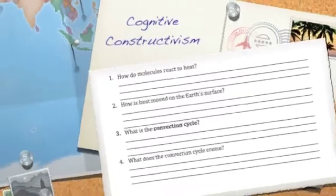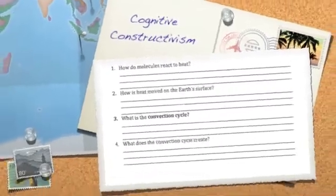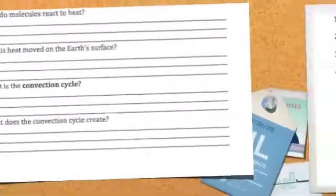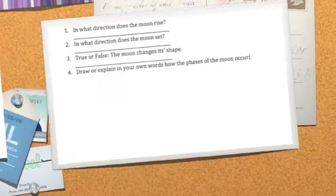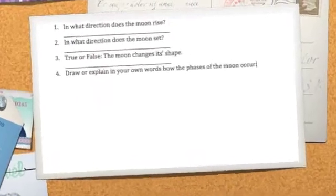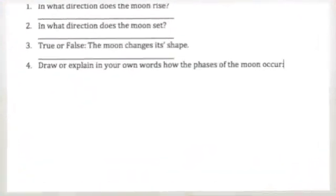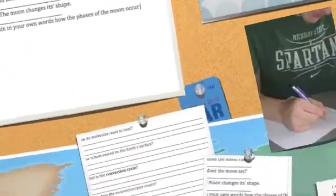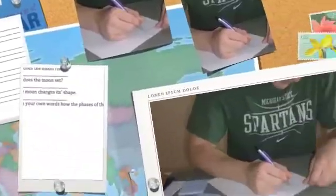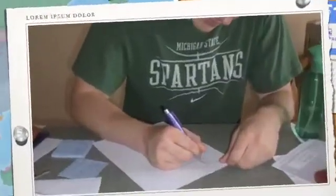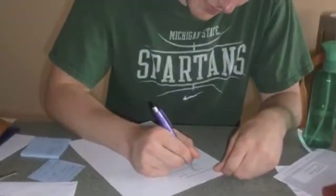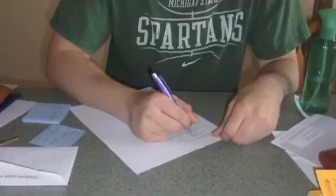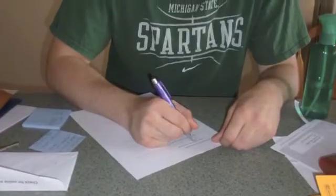For my digital story, I chose to teach two different lessons using the cognitive constructivist theory. I first assessed the learner's knowledge on both topics by using a pre-assessment. Once I knew what background knowledge the learner had, I was able to construct lessons that used discovery learning.